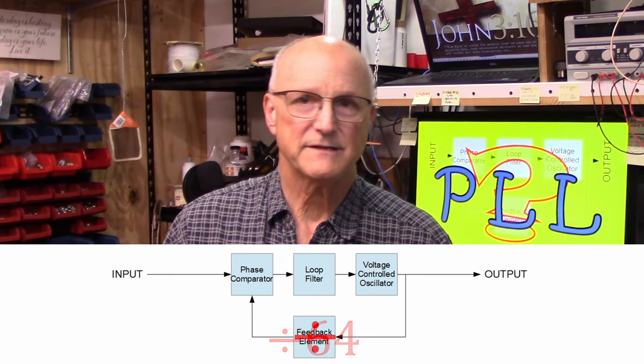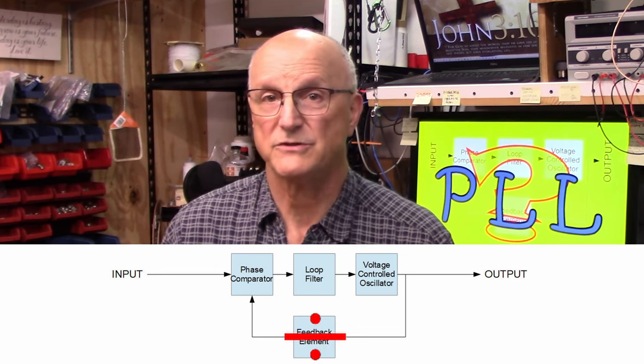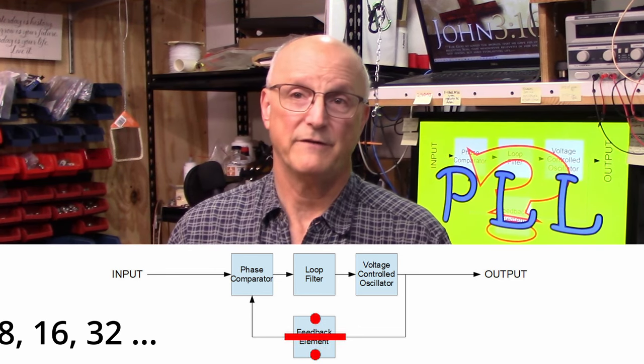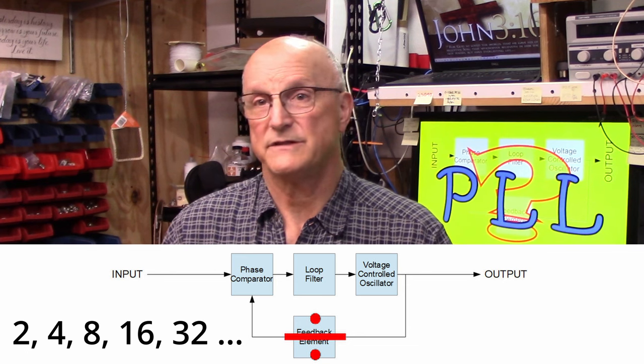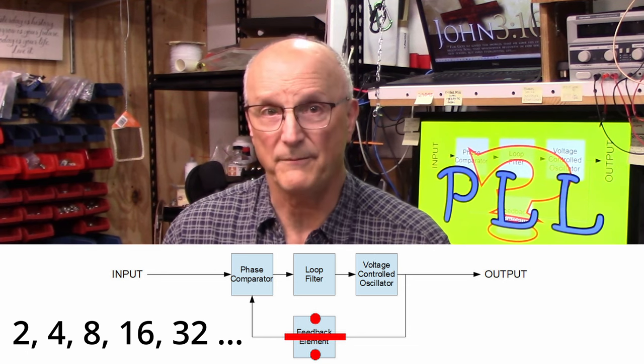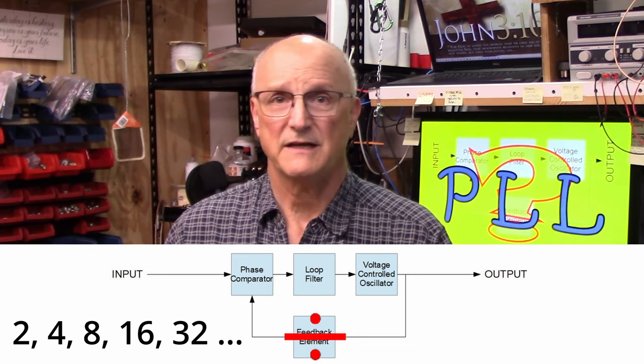In the past, this divider was just powers of 2. So, you would divide by 2, or 4, or 8, or 16, 32, and so on. And in many cases, that still is. Then, this became divide by integers only. You could divide by 2, or 3, or 4, or 5, or 23, or 51. And that's not hard to do with a little logic.